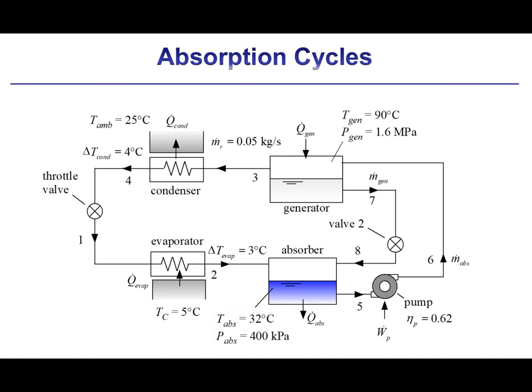In order to keep the generator and the absorber at steady state, saturated liquid that is relatively rich in ammonia is pumped from the absorber to the generator using a pump with efficiency of 62%. And then saturated liquid with less ammonia is removed from the generator and expanded through valve 2 back into the absorber.